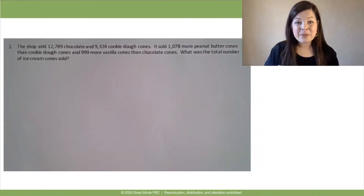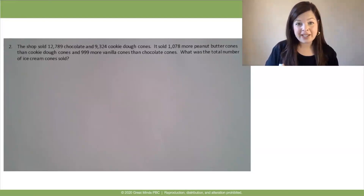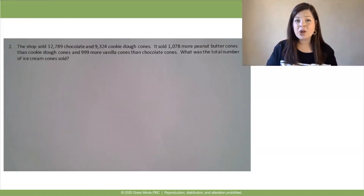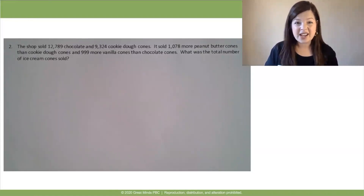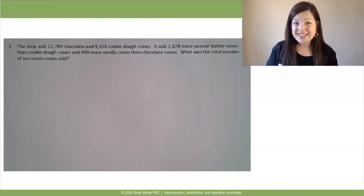Okay, let's look at problem two now. Pause the video and read problem two to yourself and draw a tape diagram to model the story. Remember to pay close attention to what you're comparing each item to. And if you get stuck, remember to just go back and focus on one little chunk at a time. Ask yourself, what can I draw just to represent that one little part of the story? When you're done, come back and we'll compare our tape diagrams. Get to work!